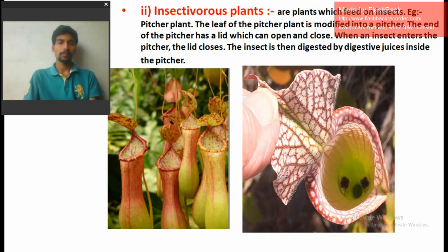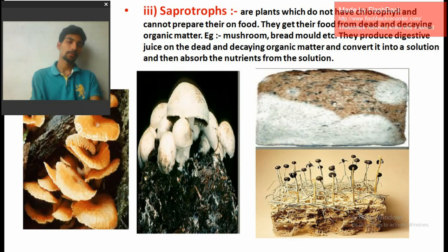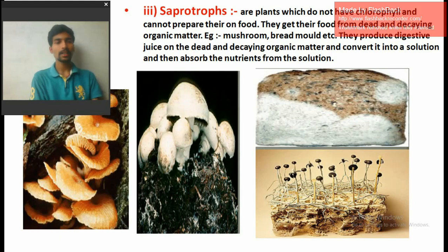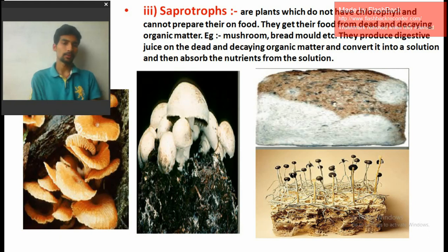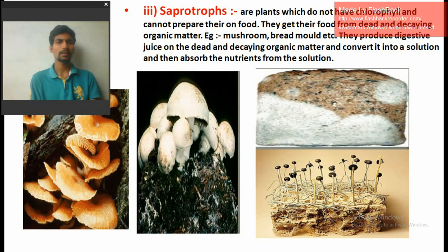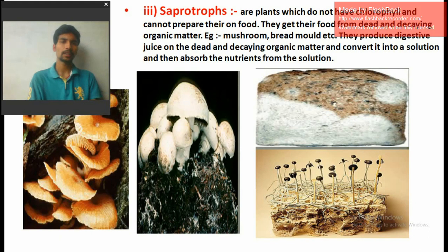The next topic is saprotrophic plants. Saprotrophic plants are a type of plant with a different mode of obtaining food. These plants do not have chlorophyll and cannot prepare their own food. Instead, they get their food from dead animals or dead organic matter. Such plants are called saprotrophic plants.